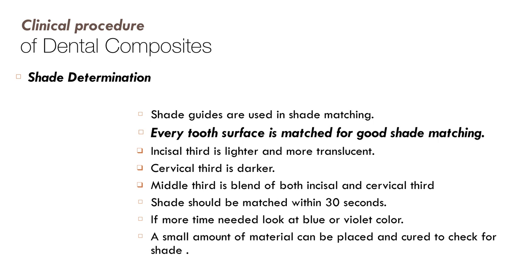Shade guides in the market are primarily for crowns, but for composite restorations you need to make a custom shade guide. Each tooth surface must be matched for good shade matching. Use a natural neutral background, ideally in daytime. The incisal third is lighter and more translucent. The tooth has three zones — cervical, middle, and incisal — each with different coloration. Shade should be matched within 30 seconds to avoid eye fatigue.